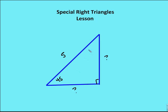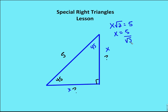Now let's take a look at a 45-45-90 triangle. Both sides opposite the 45-degree angles are x, and I know the hypotenuse is 5, so x times root 2 equals 5. I divide by root 2 to solve for x, getting x equals 5 over root 2. I rationalize the denominator and get 5-root 2 over 2 as my final answer, so both legs are 5-root 2 divided by 2.